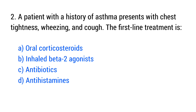Question number 2. A patient with a history of asthma presents with chest tightness, wheezing, and cough. The first line treatment is? The right answer is option B: Inhaled beta-2 agonists.